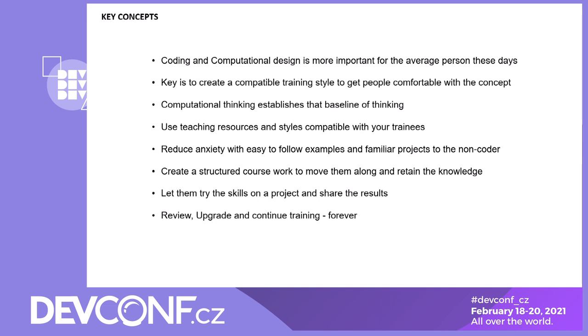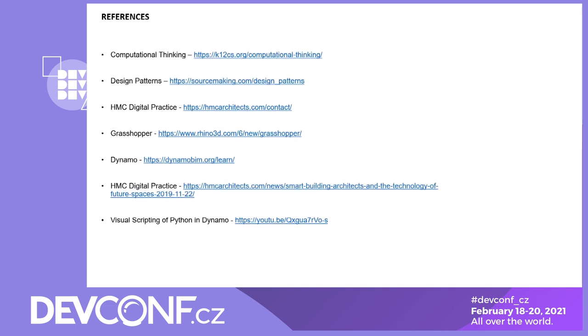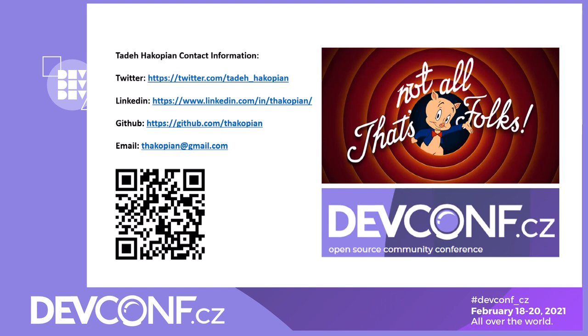If you take anything from here, make sure people are comfortable with how you train them — otherwise nothing you do will get through to them. Here are some resources on computational thinking, design patterns, HMC, the visual scripting tools, our digital practice, and visual scripting of Python. If you want to see the text and the visual come together, there's a link provided. And that's it — thank you so much. Please reach out to me if you have any questions. QR code, GitHub, LinkedIn, email, Twitter — all that jazz. Thanks a lot, it's a pleasure speaking at DevCon 2021.